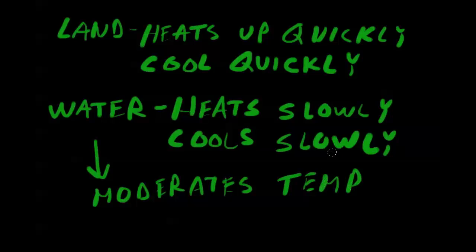Land heats up fast and cools down fast. Places like the Dakotas get really cold during the winter but really hot during the summer, because there's nothing there to moderate the temperature. Make sure in class to ask about the term continentality — the whole idea that large land masses heat up quickly and cool down quickly.